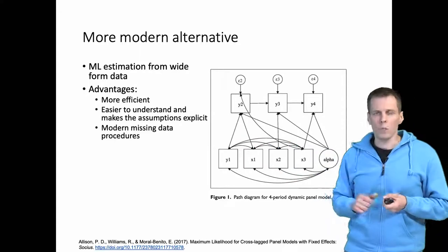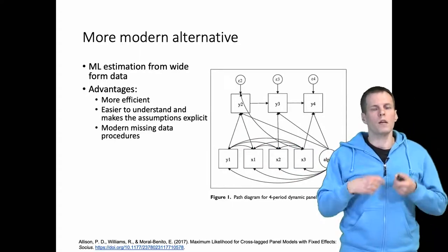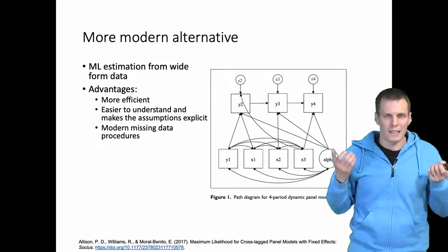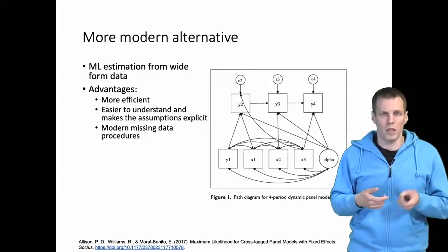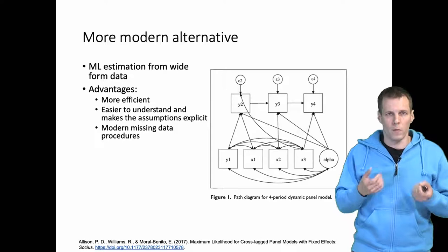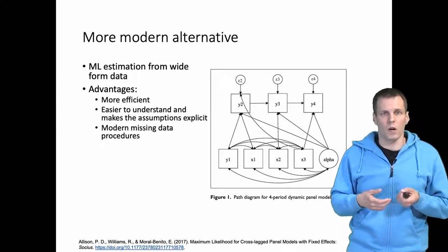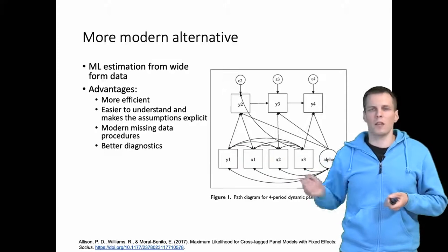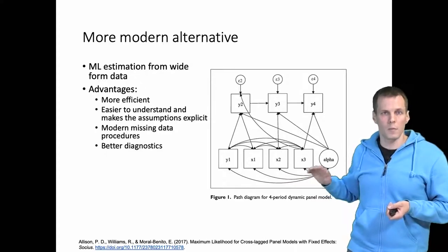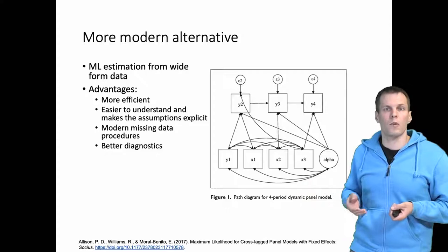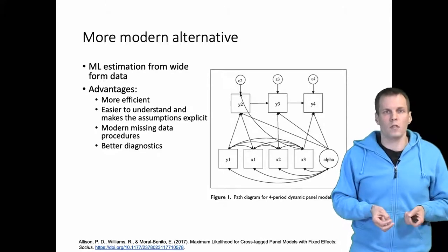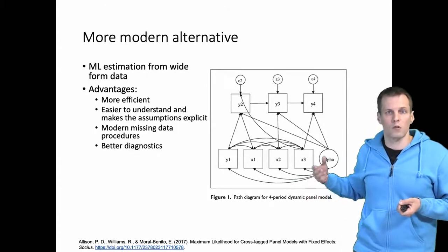Specifying this as a path diagram makes it more explicit what you are actually assuming. Modern missing data procedures are available — with the SEM approach, we can apply full information maximum likelihood which takes missing data into account automatically, whereas with GMM you would need to set up multiple imputation, which is complicated. Finally, you have better diagnostics: the same chi-square test, the same modification indices, the same covariance residuals can be applied that you use with these models every time. You don't need to remember a special Arellano-Bond test for autocorrelation.